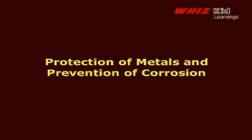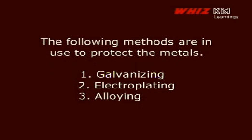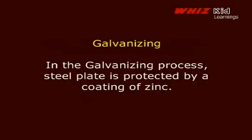Protection of metals and prevention of corrosion — the following methods are in use to protect the metals: 1. Galvanizing; 2. Electroplating; 3. Alloying. In the galvanizing process, steel plate is protected by a coating of zinc.